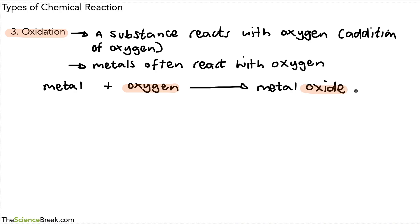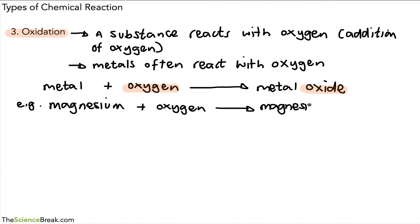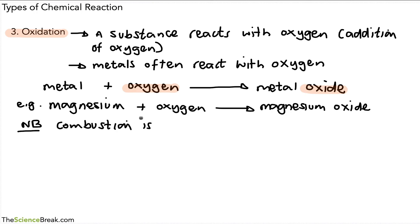Worth mentioning: when oxygen reacts with a substance and becomes part of a compound, the word 'oxygen' becomes 'oxide'. For example, if we have magnesium reacting with oxygen, it becomes magnesium oxide. It's also worth noting that a combustion reaction is an example of an oxidation reaction — when we looked at combustion at the beginning, it was also an oxidation reaction because there was a reaction with oxygen.